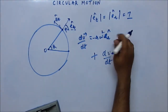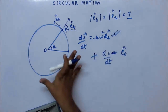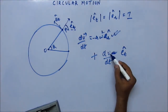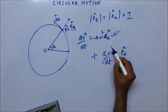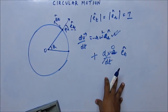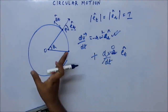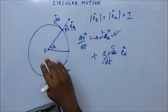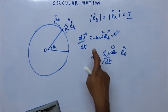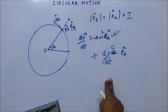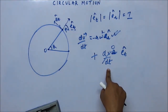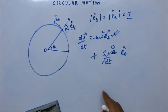Centripetal acceleration will always be required for the particle. Tangential acceleration may not be there. If tangential acceleration is not there, then velocity will not change — dV by dt will be zero — and the particle will have uniform circular motion. When both are present, the direction is also changing and the velocity is also increasing, giving non-uniform circular motion. So centripetal acceleration changes the direction, and tangential acceleration increases the tangential velocity.